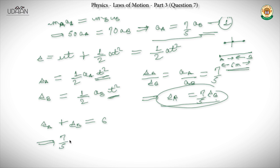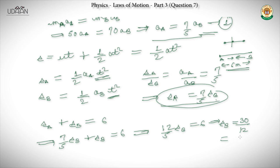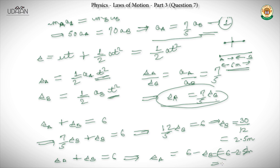So (12/5)·SB = 6, giving SB = 30/12 = 2.5 meters. And SA = 6 − 2.5 = 3.5 meters.